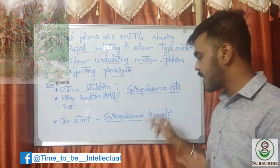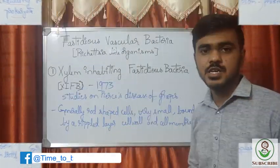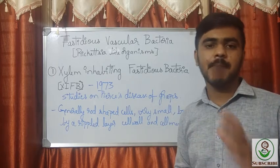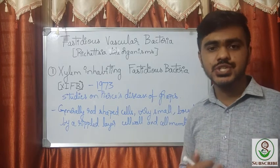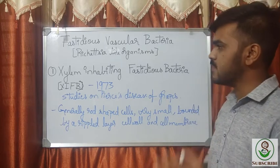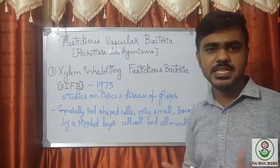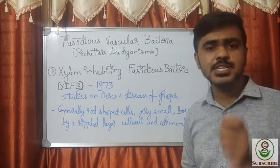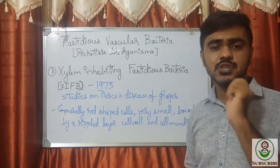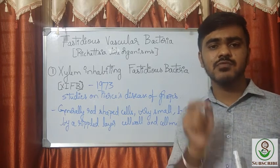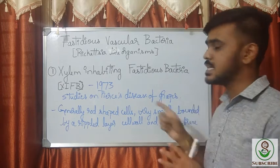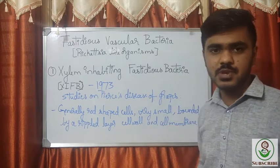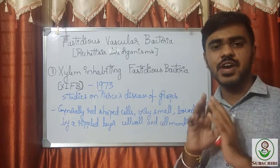Next we shall see another group: fastidious vascular bacteria, which are rickettsia-like organisms. We name them fastidious vascular bacteria because these organisms require specific nutrients in their growth medium. If those particular nutrients are not present, these organisms will not grow — their growth is very slow.